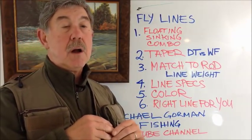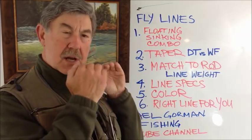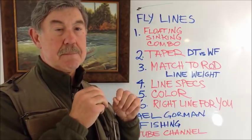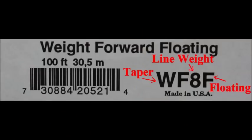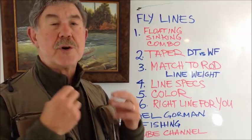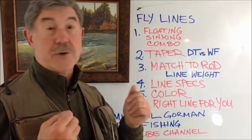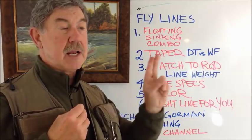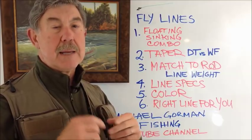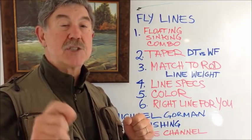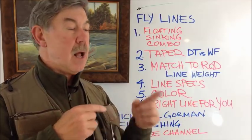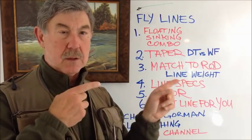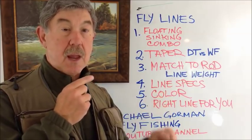You need to match the line to the rod. On the line box is a code of letters and numbers. The first two letters refer to the taper: most often you'll see DT for double taper or WF for weight forward. The number that follows is the line weight — that's what you match to your rod. A trout rod, for example, will typically have a four, five, or six weight line recommended on it, and you can see the specs and recommended fly line on the rod blank itself.